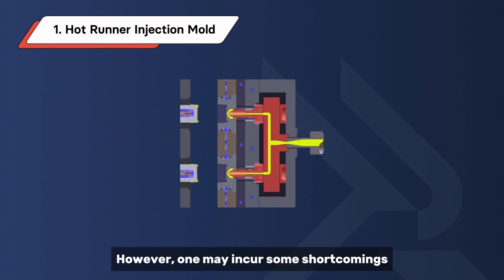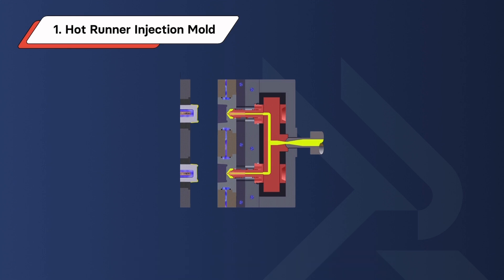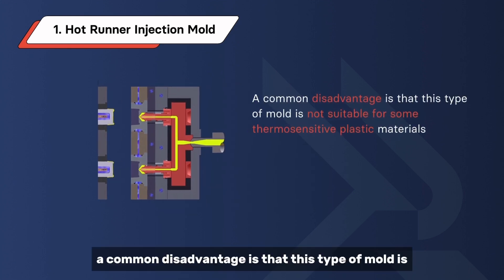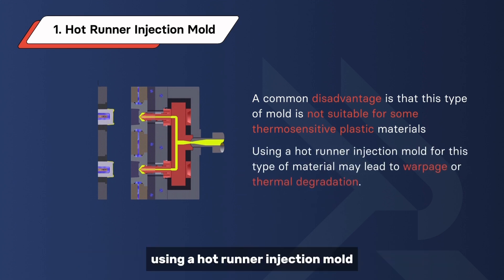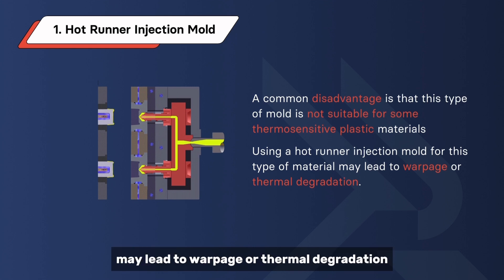However, one may incur some shortcomings when using hot runner injection molds. A common disadvantage is that this type of mold is not suitable for some thermosensitive plastic materials. Using a hot runner injection mold for this type of material may lead to warpage or thermal degradation.